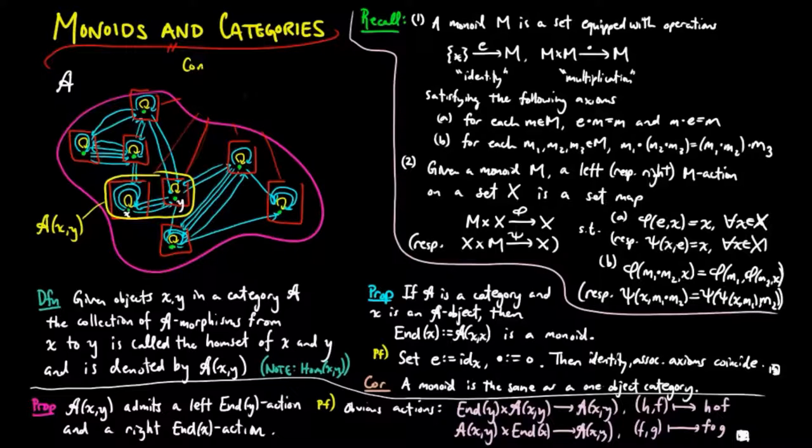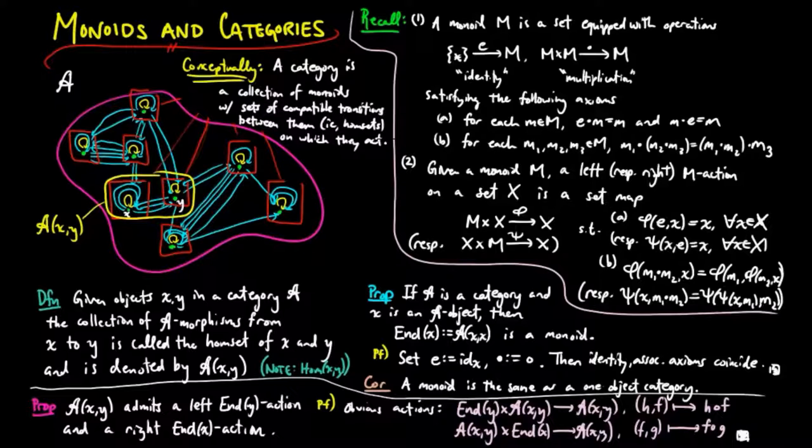Then, returning to the diagram, we see that conceptually a category is a collection of monoids with sets of compatible transitions between them, i.e. the HOMSETs, on which they act. We will return to the idea of a category consisting of certain well-behaved actions when we discuss presheaves and the Yoneda lemma.